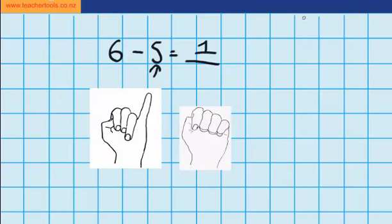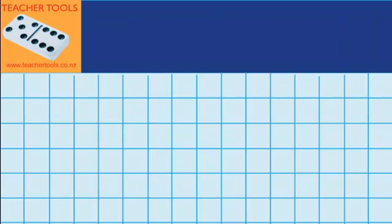Now let's try an addition question. This time let's imagine I've got 5 counters and my friend gives me 2 more. I want to work out how many counters do I have in total.